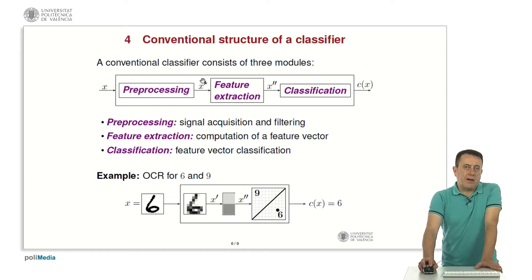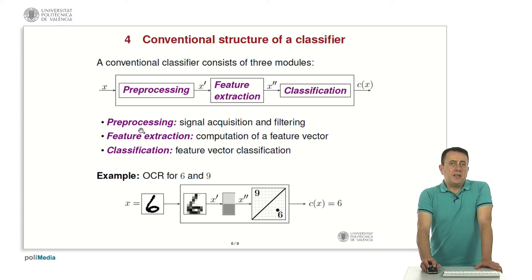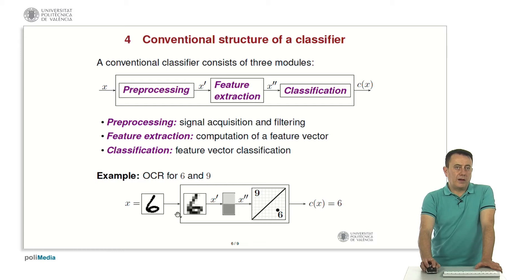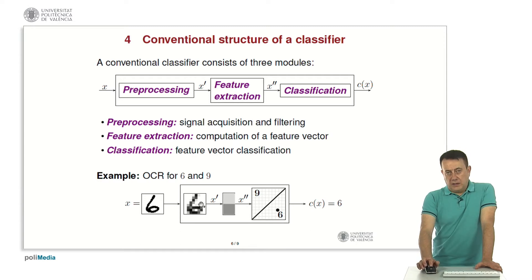How are these systems designed? Typically they consist of three modules: preprocessing, feature extraction, and classification. Preprocessing is about signal acquisition and filtering — for the OCR example, getting a digital version of the image to classify, filtering out noise and background noise, and segmenting the image to isolate the object to be recognized in a clean state.